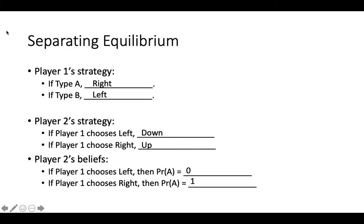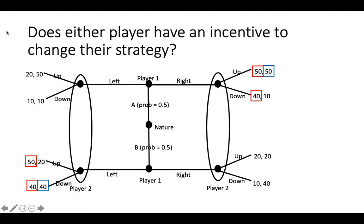We can confirm that this set of strategies and beliefs is in equilibrium by asking whether, given what the other player is doing, either player has an incentive to change their strategy. Given player 2's strategy and beliefs, does a type A player have an incentive to switch from right to left? If they do, player 2 will assume that player 1 is type B and will play down. But because player 1 is type A, they will only get 10 in this case, so a type A player 1 will not want to play left instead of right. Similarly, a type B player 1 will not want to play right because player 2 will assume that they are type A and will play up, resulting in player 1 only getting 20, which is less than the 40 they would have gotten by sticking with playing left when they are type B.